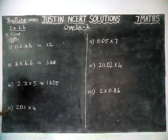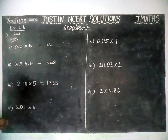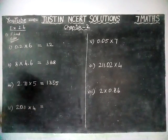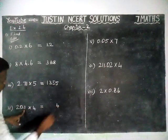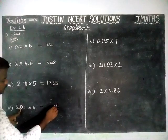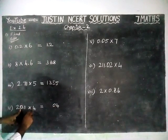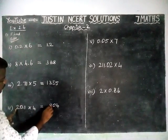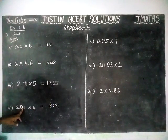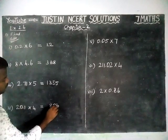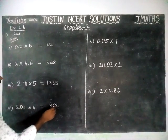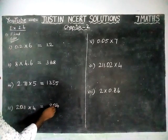And fourth question, 20.1 into 4. Multiply the numbers. 1 times 4 is 4. 4 into 0 is equal to 0. 2 times 4 is 8. And here we have one decimal place. So from right hand side, one decimal place is 4. So answer is 80.4.